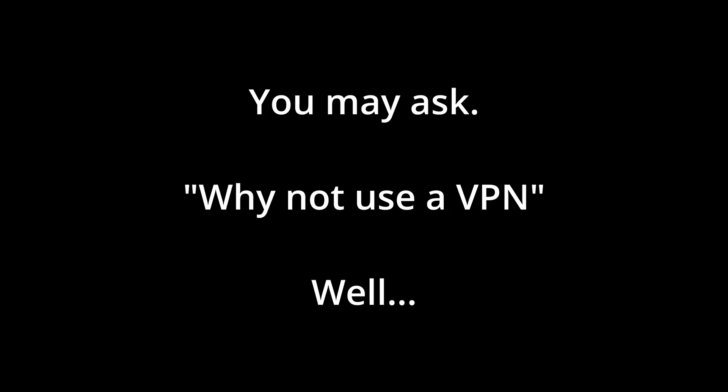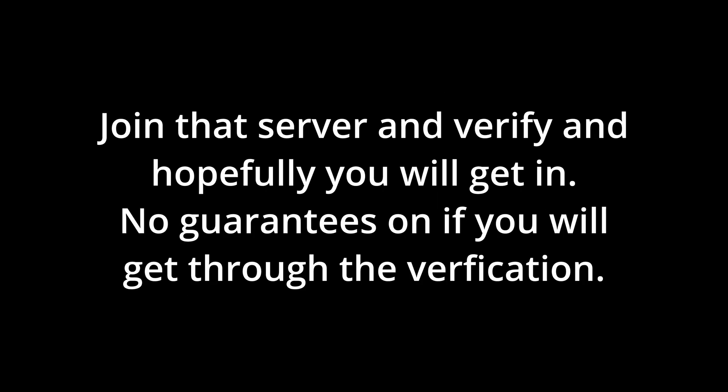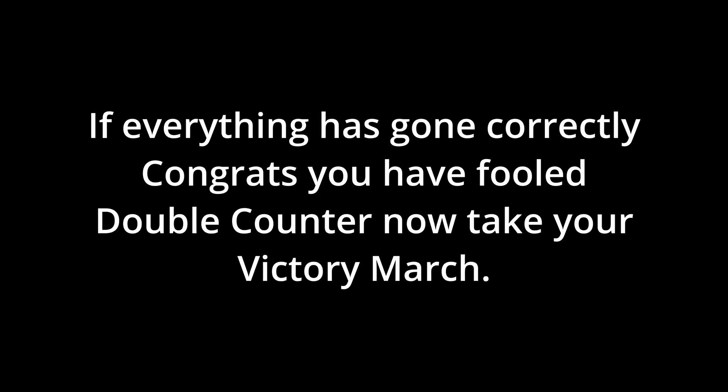The reason I have not mentioned a VPN or a proxy is that double counter can detect it, whereas just changing your own IP won't trigger it since you're on a residential connection. Lastly, join the server or servers you were trying to join, and go through the verification process on the second device. If you passed the verification process successfully, then congrats — you have bypassed double counter's alt detection.